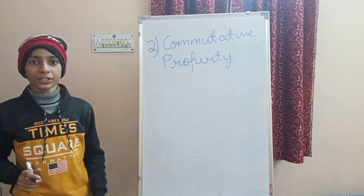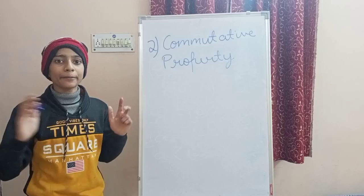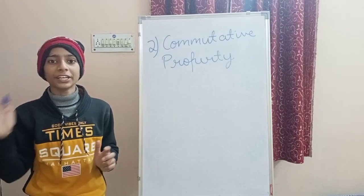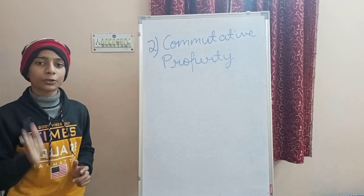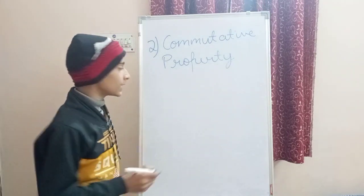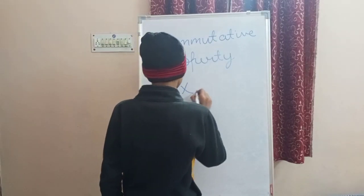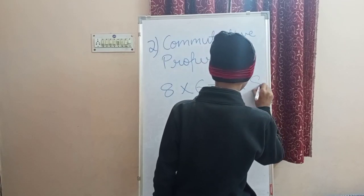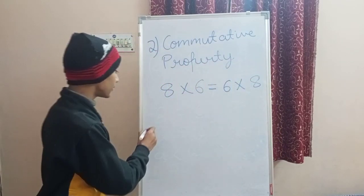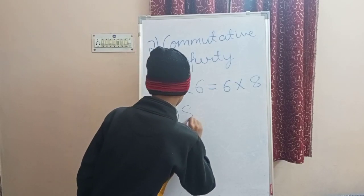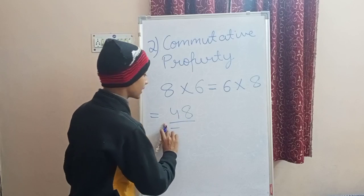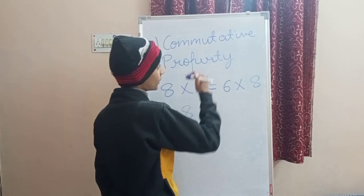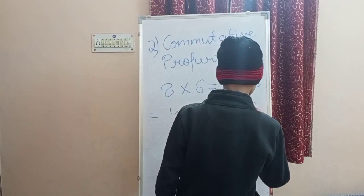Commutative property says that A into B will always be equal to B into A. Taking A as 8 and B as 6, we get 8 into 6 will always be equal to 6 into 8. The product of 8 into 6 is 48, and the product of 6 into 8 is also 48. So commutative property holds on multiplication.